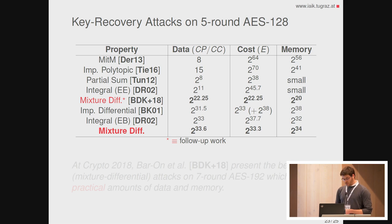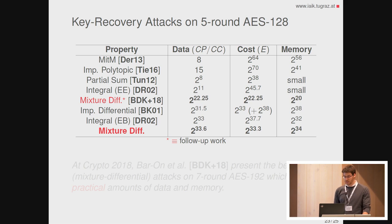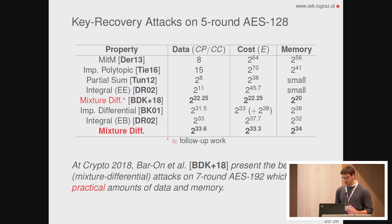In this straightforward setup, the cost is approximately 3 × 2^42 chosen plaintexts and basically the same amount of computation. At Crypto 2018, Baron, Dukeman, Keller, and Shamir proposed an improved version of this attack requiring just 2^22.25 chosen plaintexts and basically the same amount of encryption. This attack is one of the best among all attacks on five rounds of AES, and the data is still competitive. Moreover, they also proposed a way to extend this attack to seven-round AES-192, with practical amounts of data and memory.